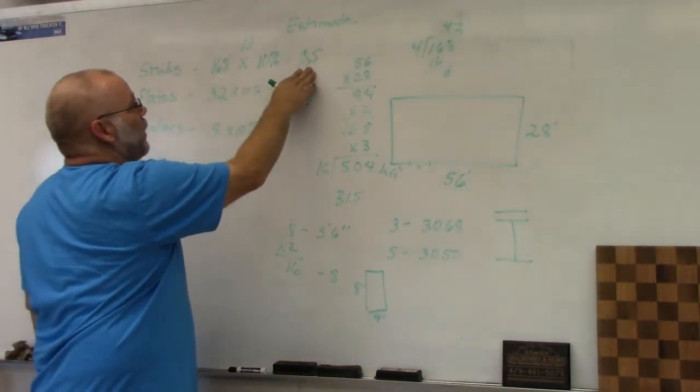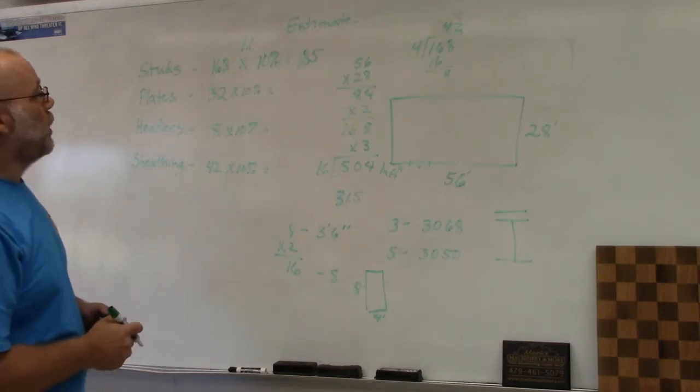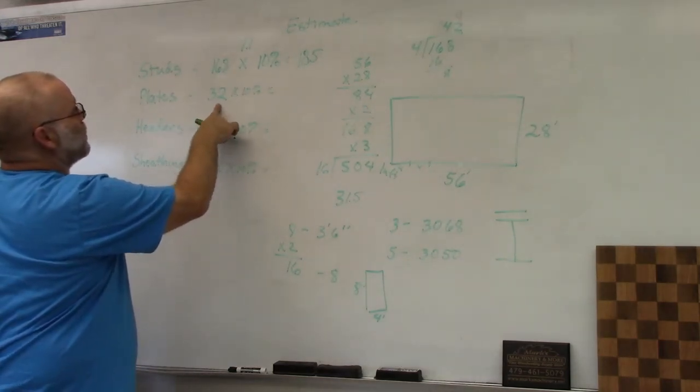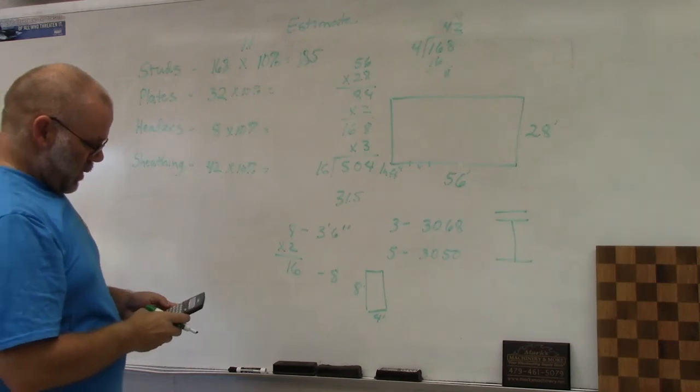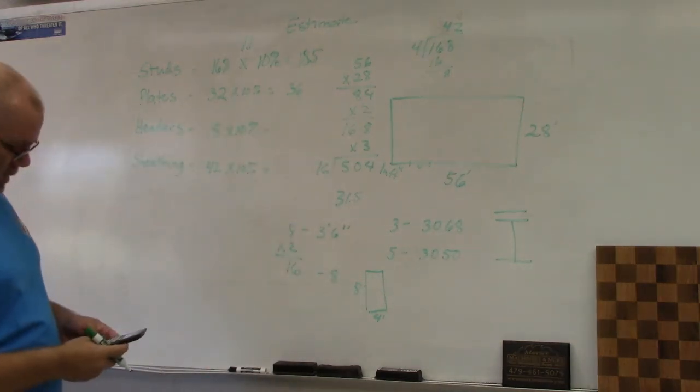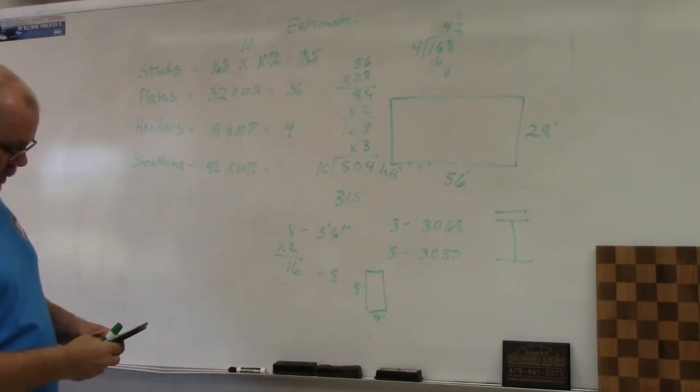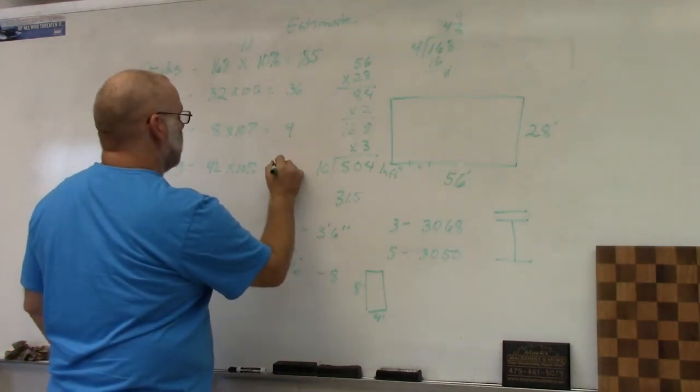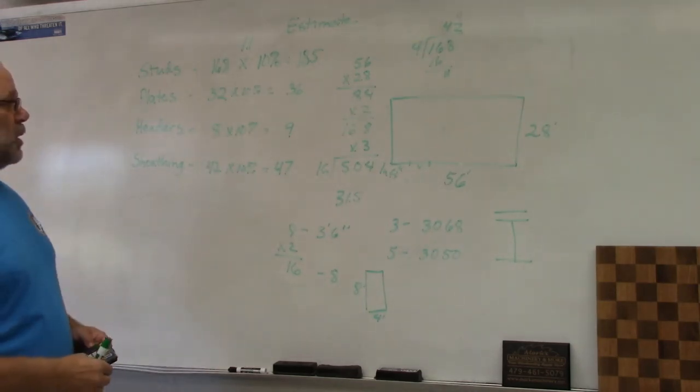Instead of buying 168 studs I'm going to buy 185 because I'm going to need bracing, stiff backs, blocking, and all kinds of other stuff. For the plates, 32 times 1.1 is 35.2, so I'll round it up to 36. For the two by 12 headers, 8 times 1.1 I'm going to round up to 9. For my sheeting, times 1.1 will give me 46.2 or 47 sheets.